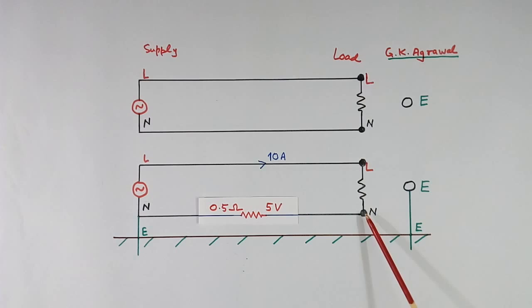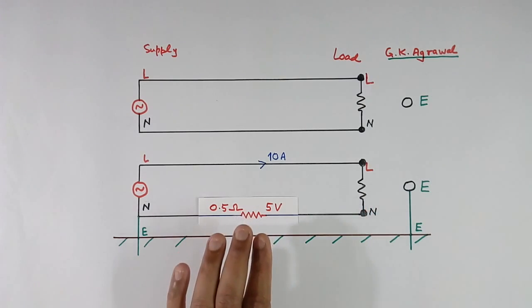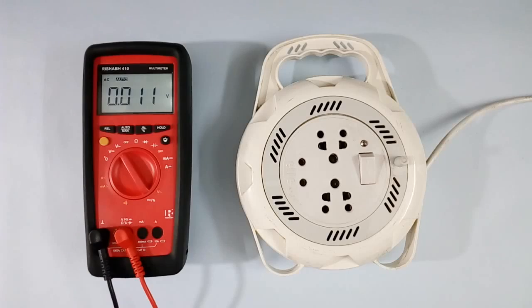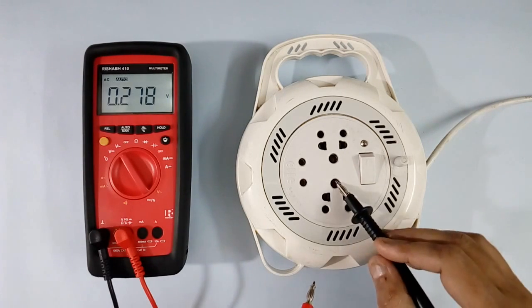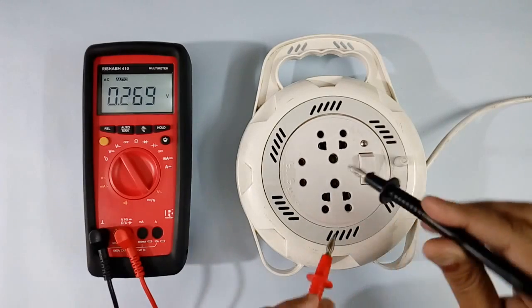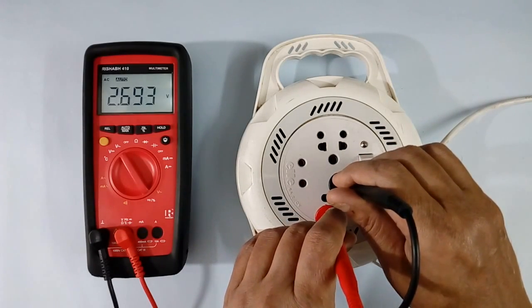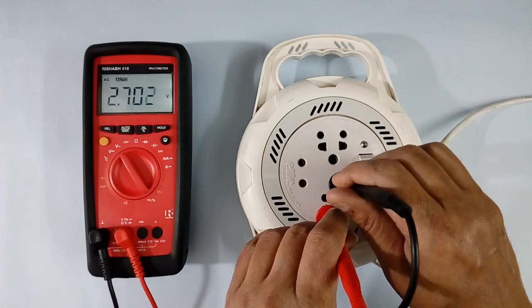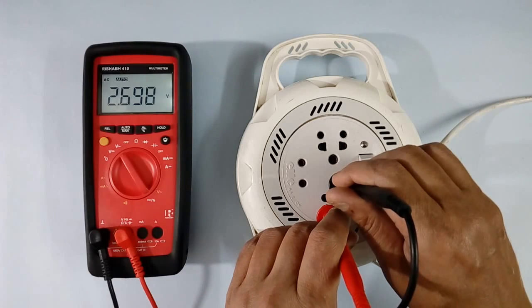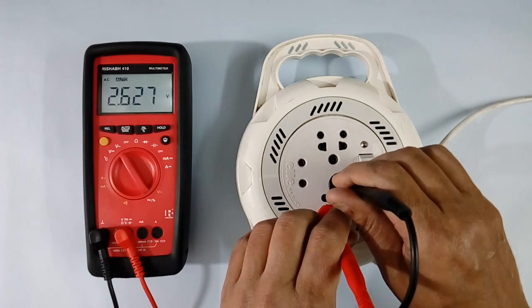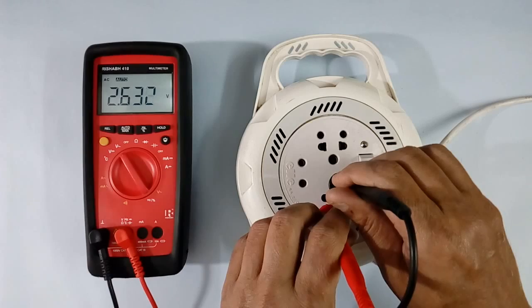Now I will measure the voltage of neutral. This is my house supply. Now we will measure the voltage between neutral and earth. This is earth, this is line, this is neutral. So neutral voltage with respect to earth is only 242 volts. With respect to earth, it is higher.